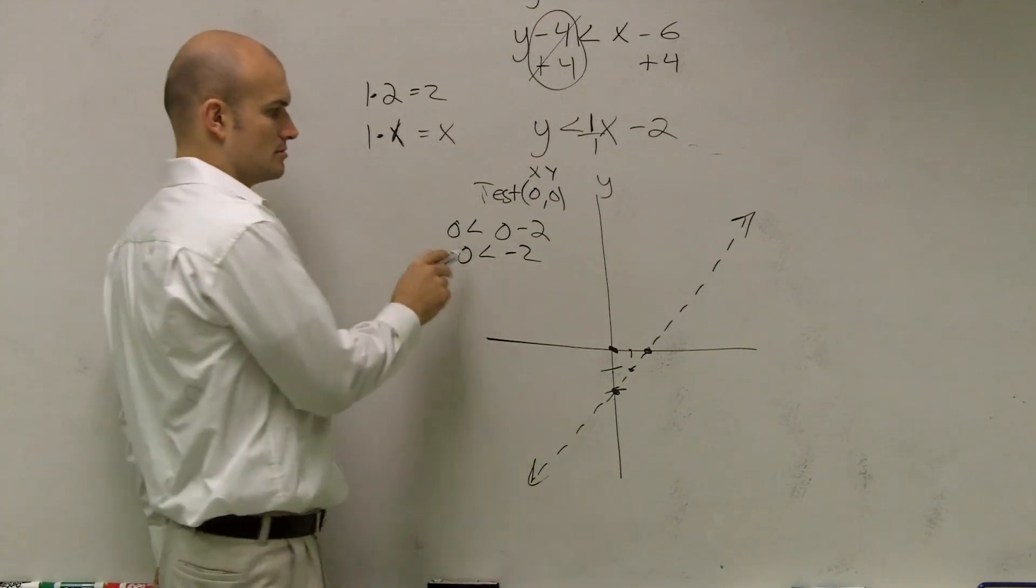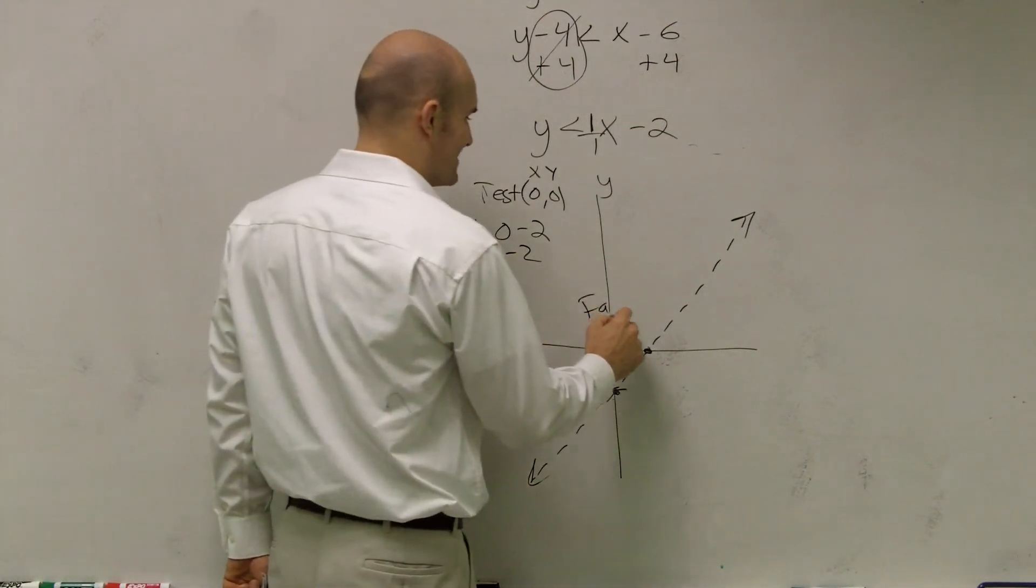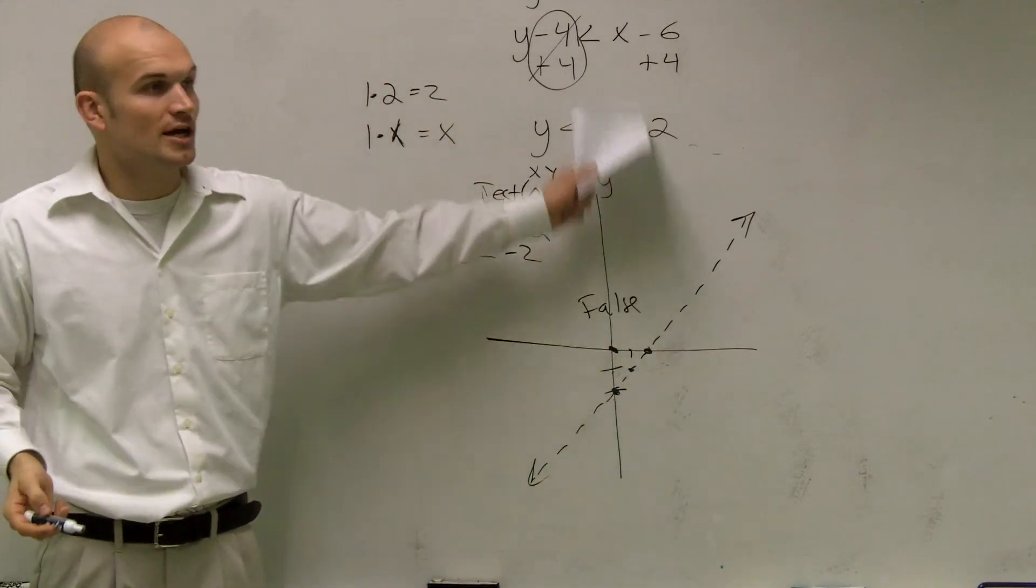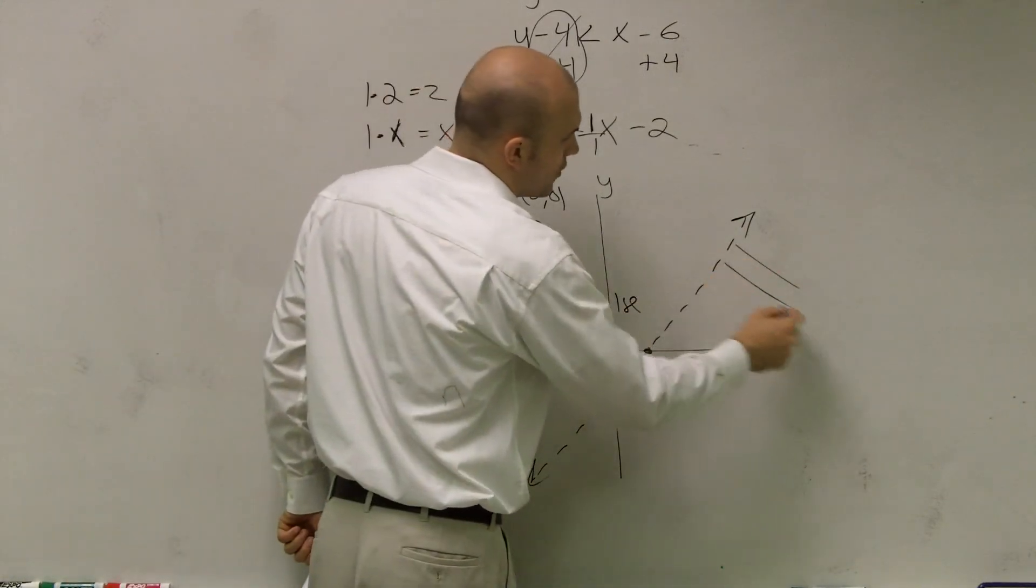True. Negative. 0 less than negative 2. That's false, right? Yes. So, since that's false, that means all the other numbers above your line are false. So we need to shade below our line.